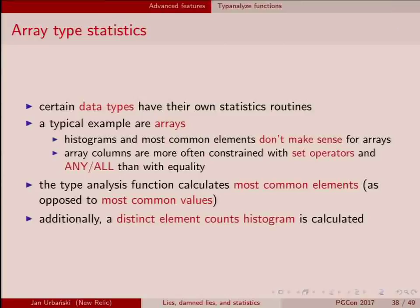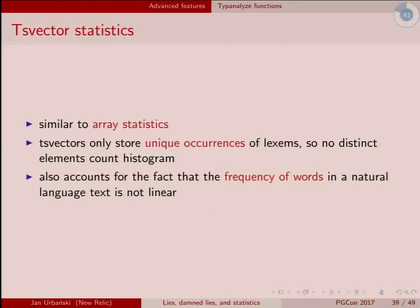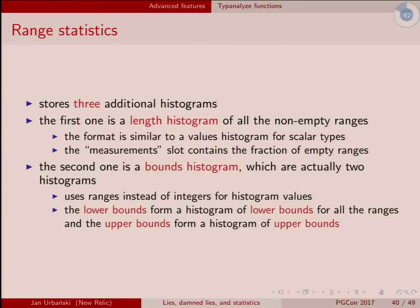Let's get into some meatier stuff. For arrays, it doesn't make sense to have most common values because no two arrays will be exactly the same. What you actually want is how many distinct values are inside those arrays — you need to unpack them and look at distinct counts of the things inside. That's where the extra type-analysis functions come into play. TS vectors are like arrays but for text — again, you need specific stats calculations. For ranges, you really don't need to know how many identical ranges exist; you need to know about the bounds of the ranges, so you unpack the data and get stats from those bounds.